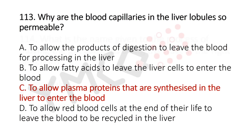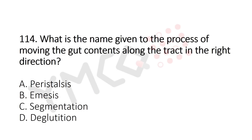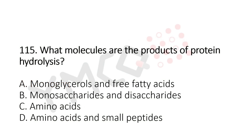Now Question 114: What is the name given to the process of moving gut contents along the tract in the right direction? Option A: peristalsis, Option B: emesis, Option C: segmentation, Option D: deglutination. The answer is Option A: peristalsis.